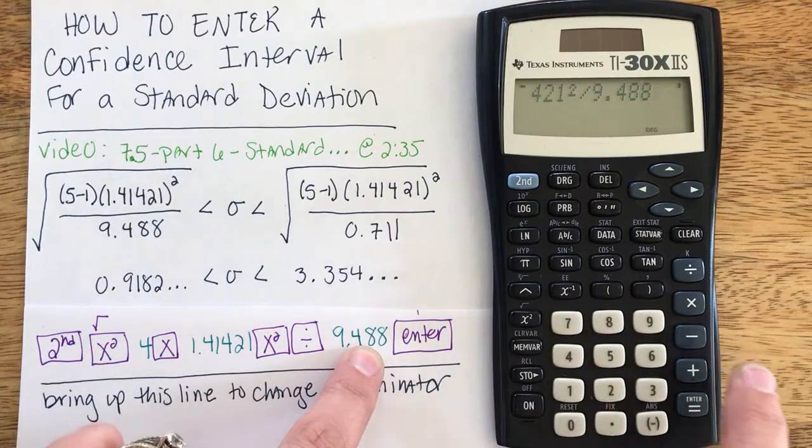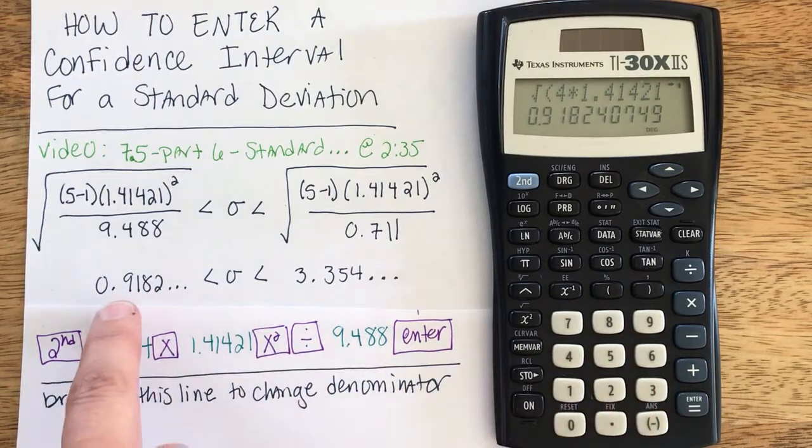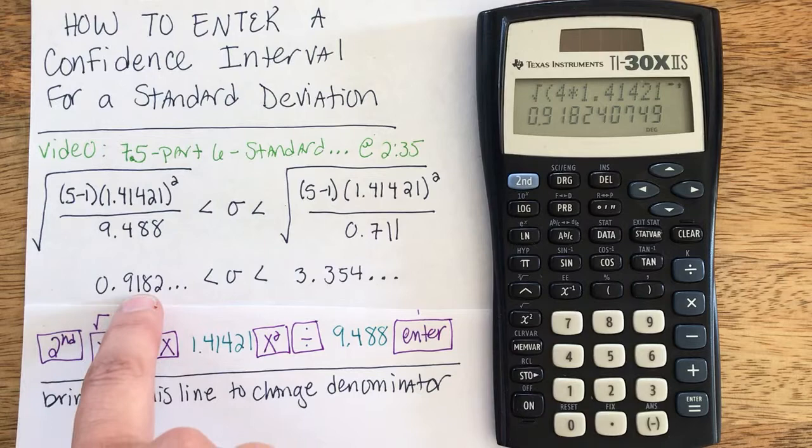And I've got everything I need on the inside of my square root, so I can go ahead and hit enter, and I get the lower bound number of 0.91.